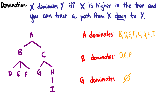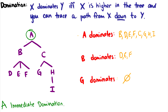Immediate domination means you look directly below just once. What does A immediately dominate? We look down one level: B and C, then we stop. So A immediately dominates B and C. The difference is: with domination we keep looking down as far as we can go; with immediate domination, we look down one level and stop.